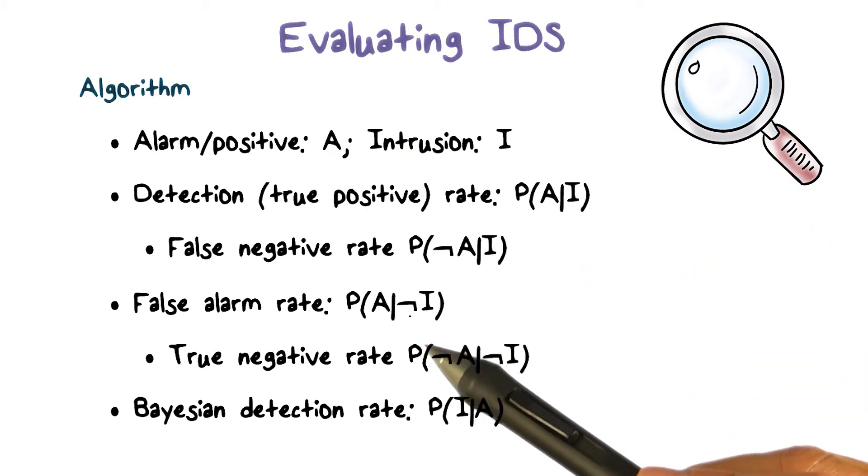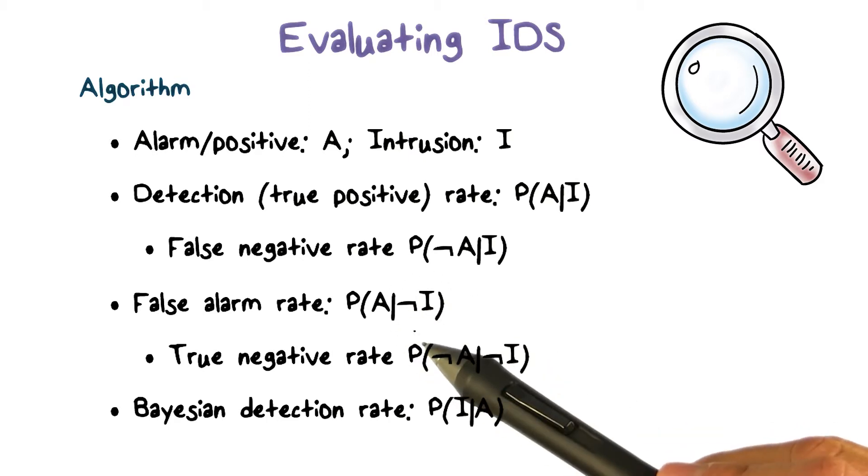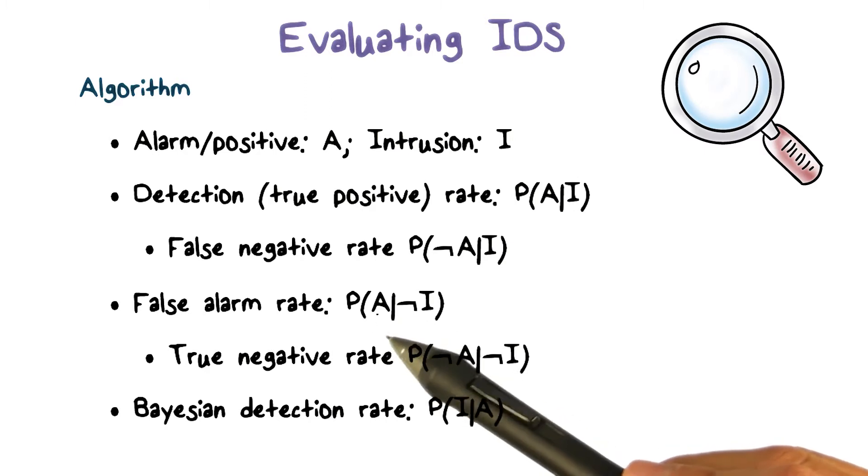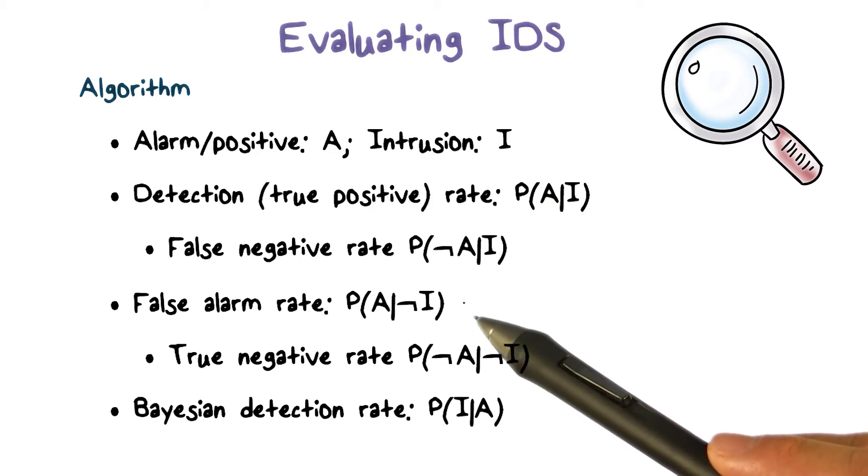False alarm rate is the probability that, given that there's no intrusion, not I, meaning it's normal, how likely an IDS would incorrectly output an alert. And true negative rate is one minus false alarm rate.